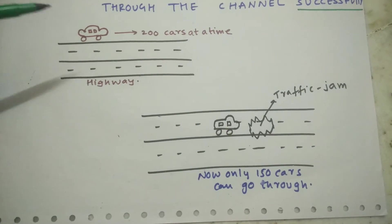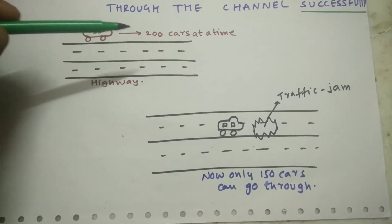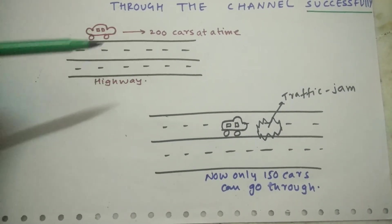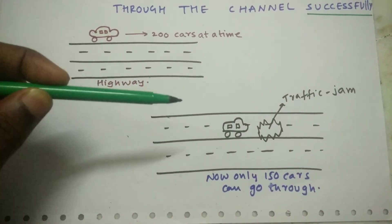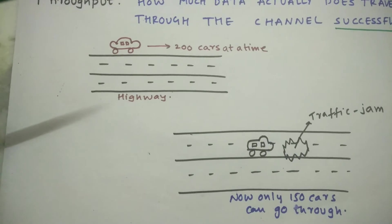So from this example, you can say that 200 is the bandwidth of this highway and 150 is the throughput of this highway.